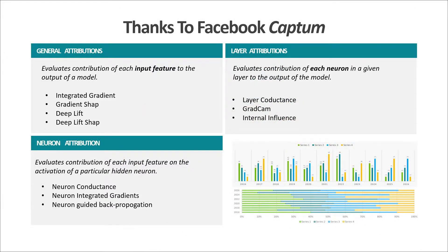Thanks to the Captum library, open-sourced by Facebook, by which we can interpret a given deep learning model. Captum provides three different kinds of functionalities: general attribution — the contribution of each input feature to the output; layer attribution — the contribution of each neuron in a layer to the model output; and neuron attribution — the contribution of each input feature on activating that neuron.